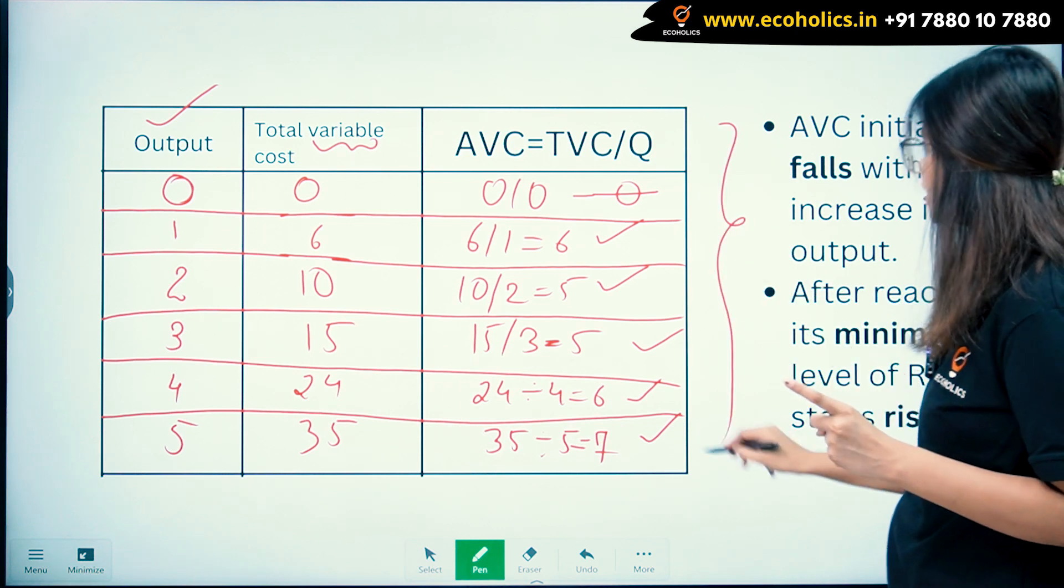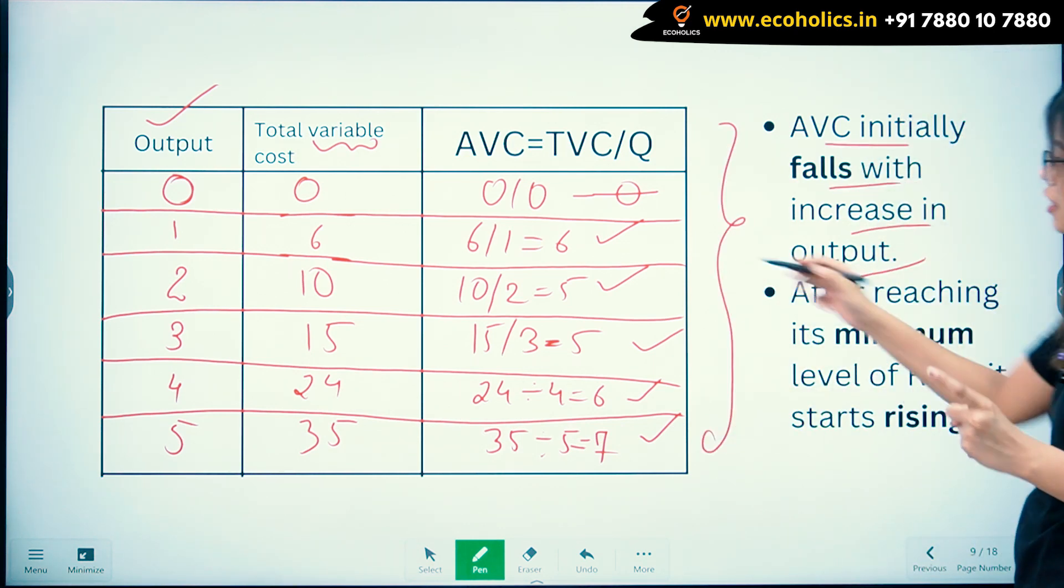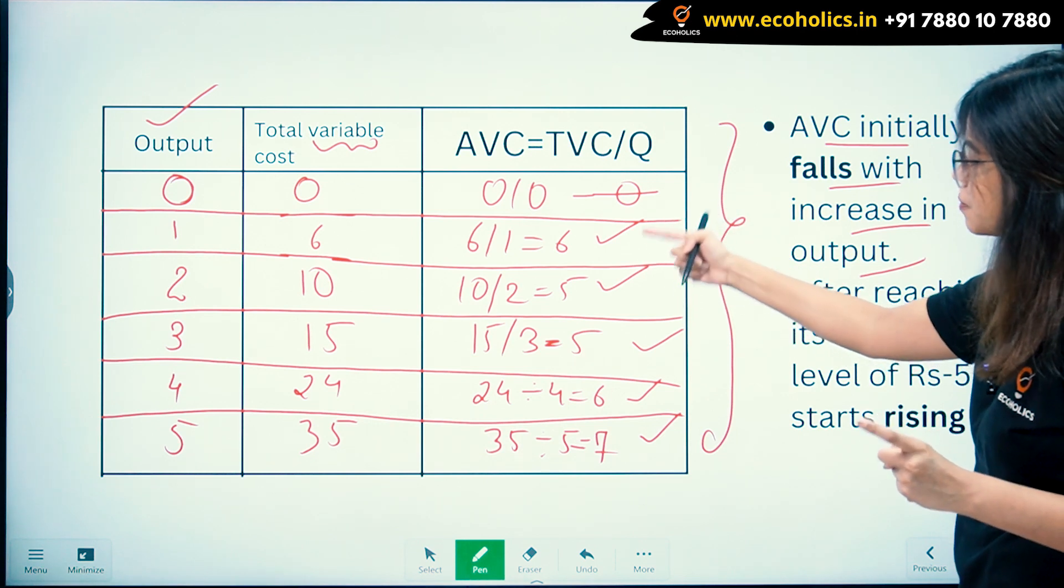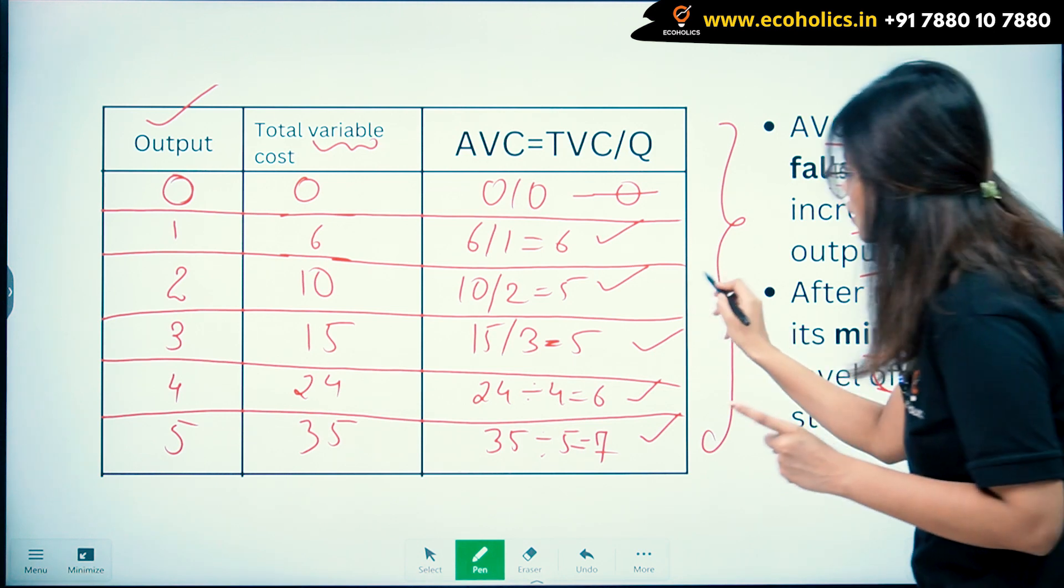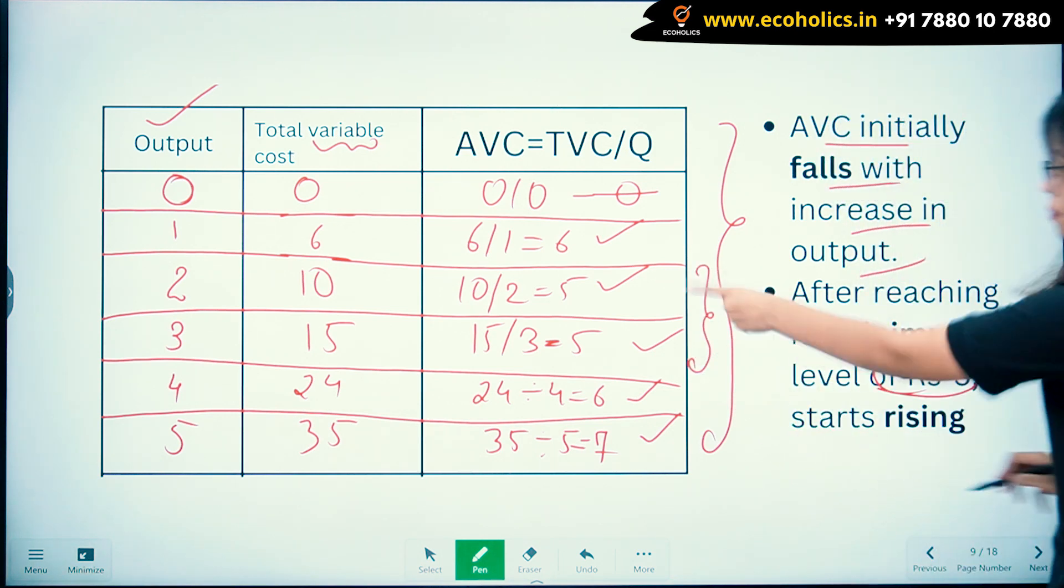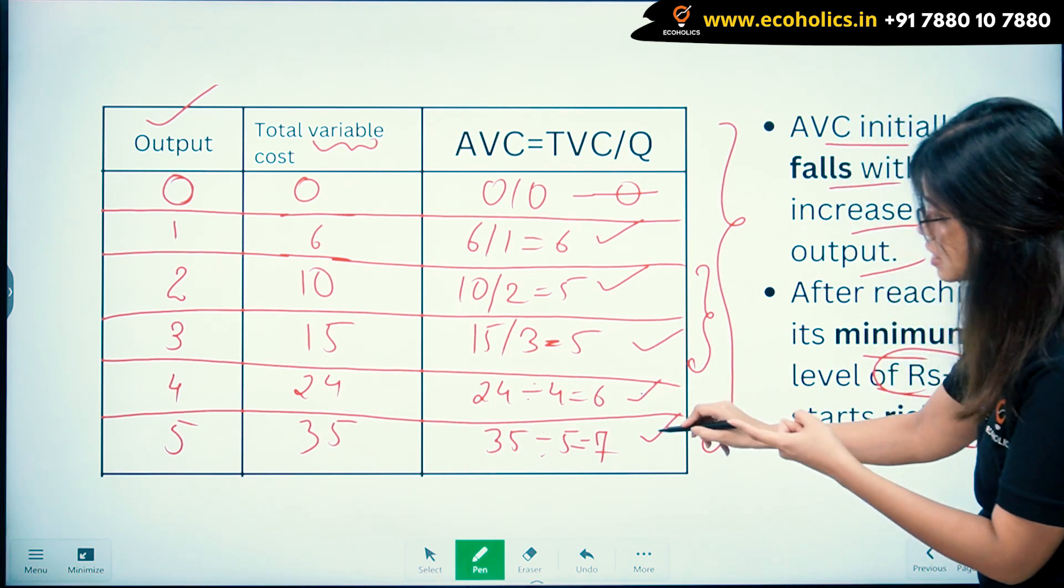So you can see that AVC initially falls with increase in output. After it reaches a minimum level of rupees 5, it starts rising—from 6 to 7.